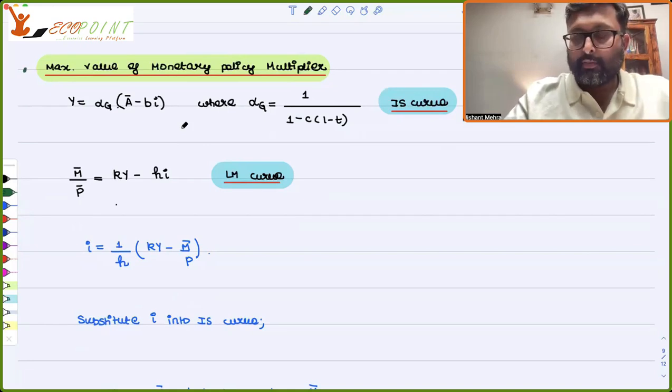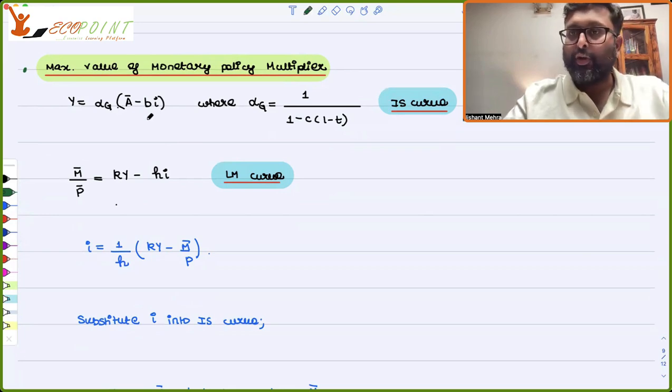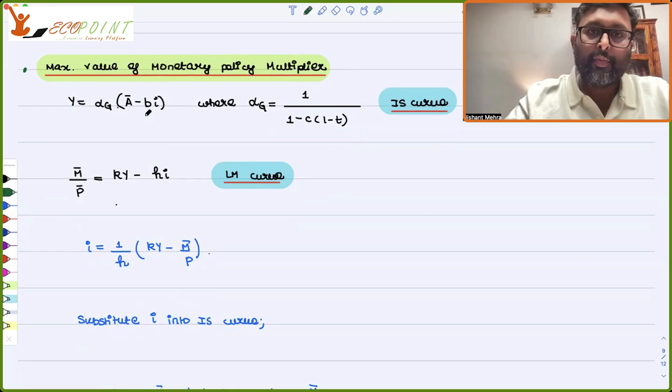What is the maximum value of the monetary policy multiplier? So if you remember, we have the IS curve as Y equals alpha G times A bar minus BI. It is the combination of interest rate and output at which goods market is in equilibrium.